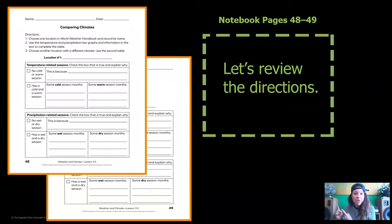Now, remember at the beginning I told you that you would need pages 48 and 49 from the notebook? Go ahead and get those now. Let's review the directions. Number one, choose one location in World Weather Handbook and record its name. And this right here where it says location number one is where you're going to write the name of the location.